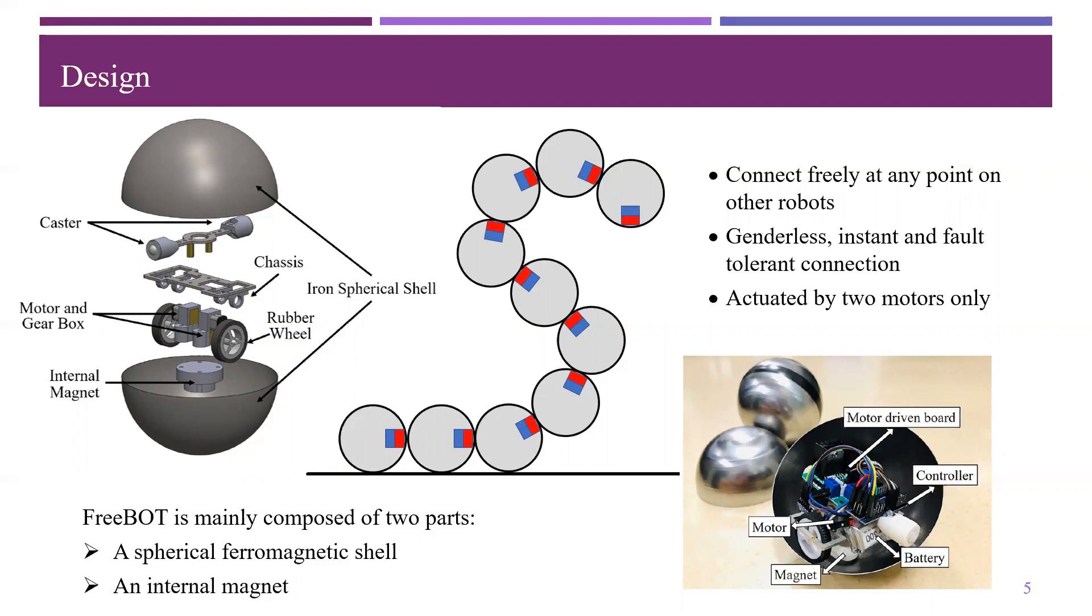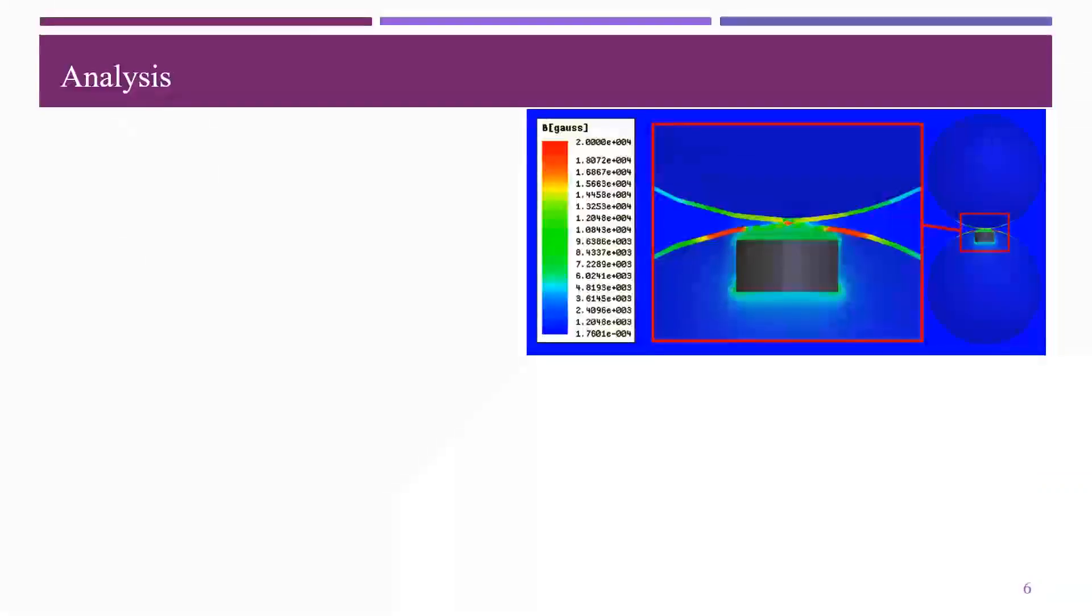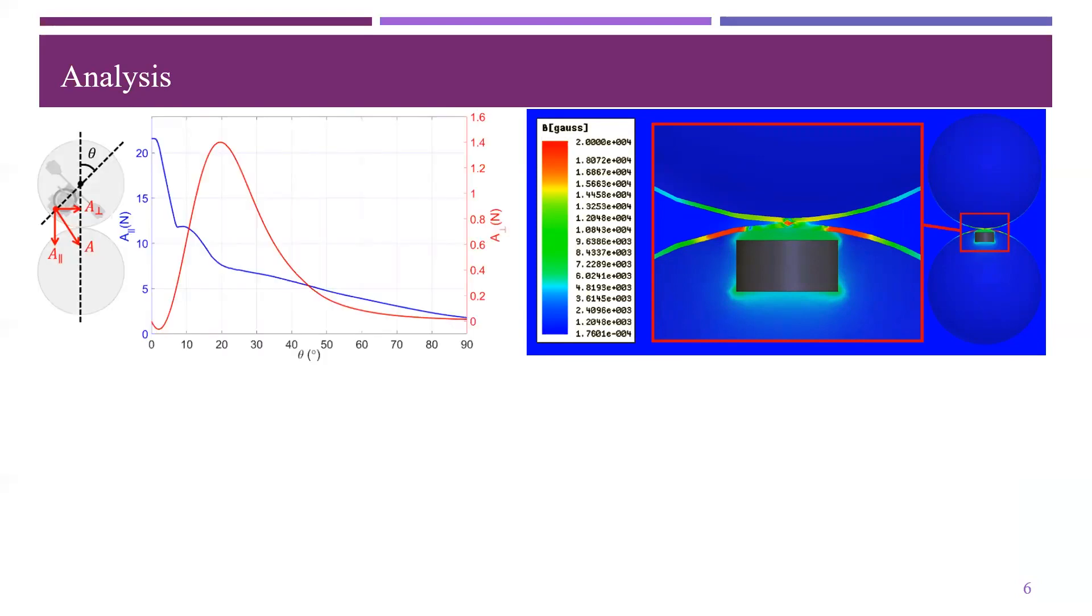We used finite element software to simulate the FreeBot's magnetic field distribution and calculated the forces in some cases. The upper left corner shows when the internal magnet is slightly raised, it will generate a moment force for rolling. Based on this feature, FreeBot can achieve free reconfiguration between modules.